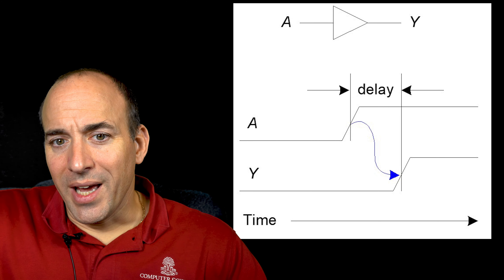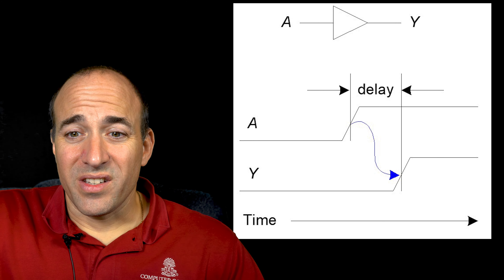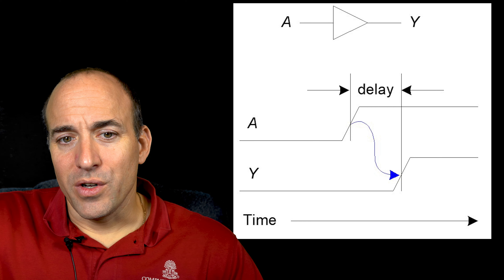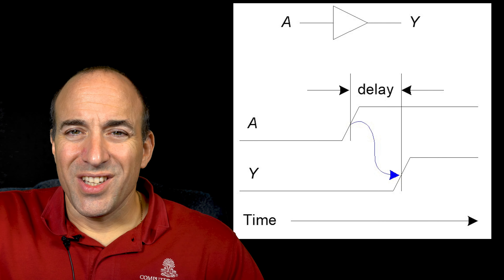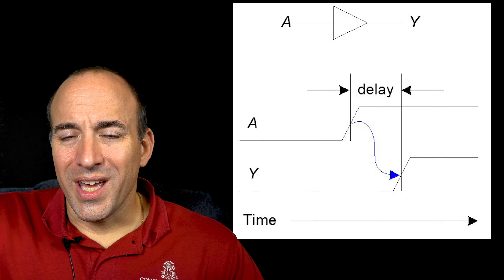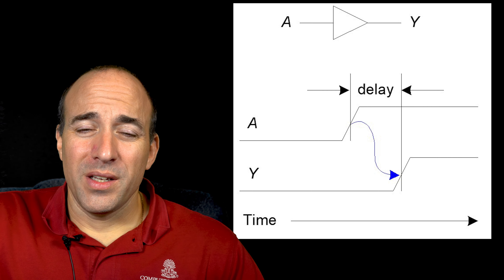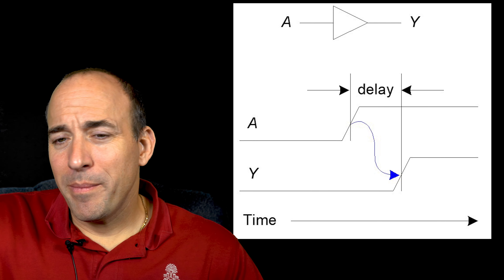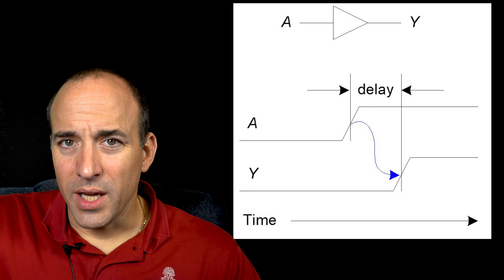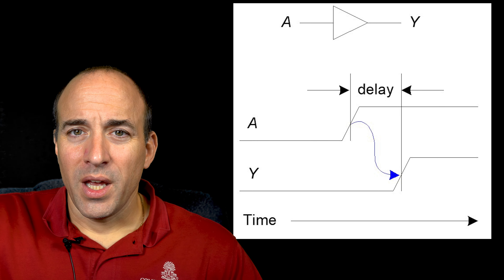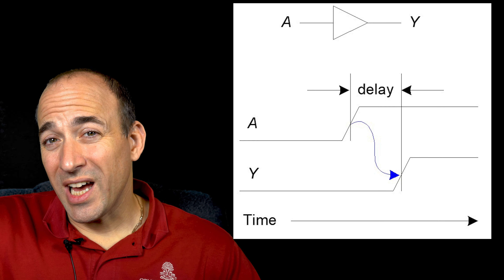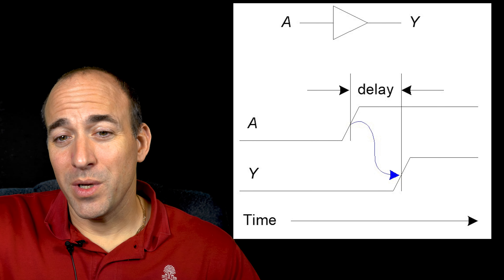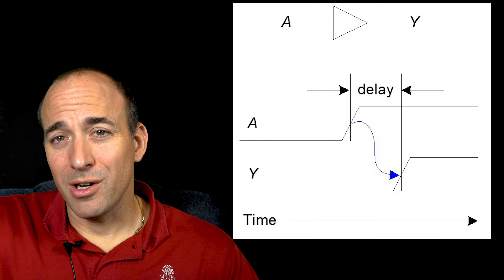This gate delay is caused by internal resistance and capacitance within the transistors that comprise the logic gate. The delay is usually measured from the time when the input is changing and halfway between the zero and one voltage level, to the point in time when the corresponding output change is halfway between the zero and one voltage level. The difference in those two times is the delay.